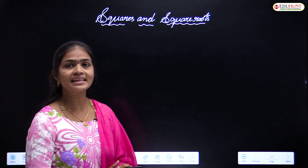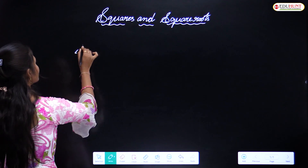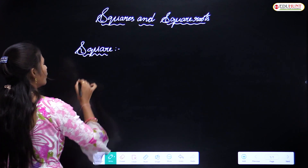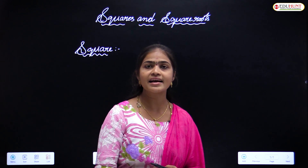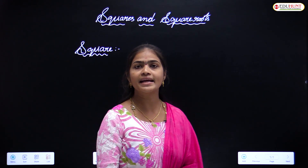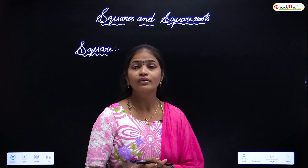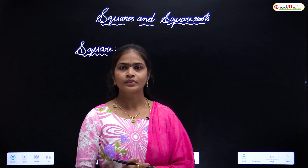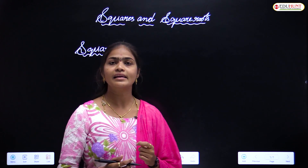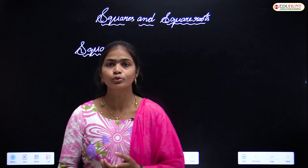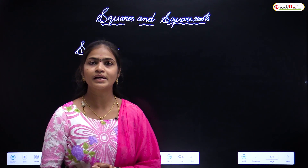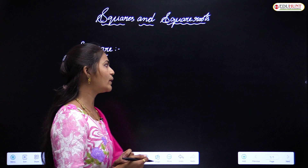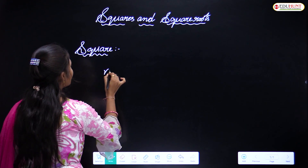So what about squares? What is the definition of a square? A number which can be expressed as the product of two equal factors - that number is said to be a square. In other words, a number which can be multiplied by itself two times - that product is called a square.